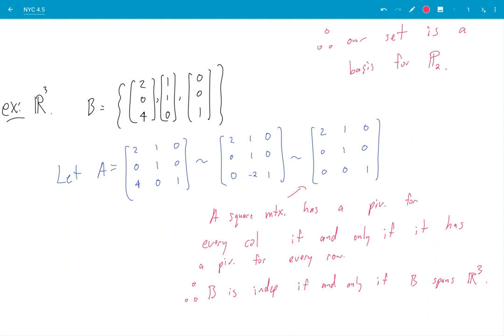Okay, independence, the presence of a pivot for every column, automatically implies a pivot for every row, which automatically implies that the span of this guy is R3. So you can't have a set like this with three elements that somehow is independent but doesn't span.